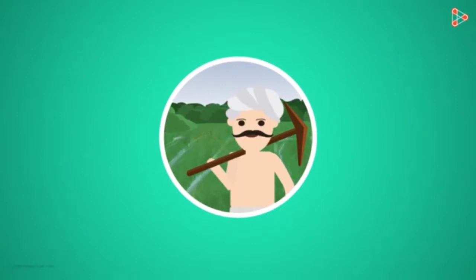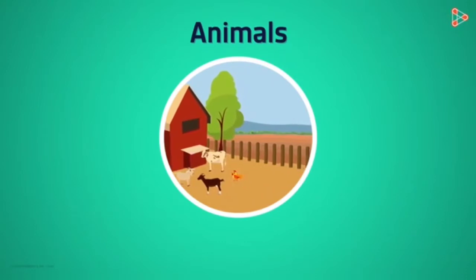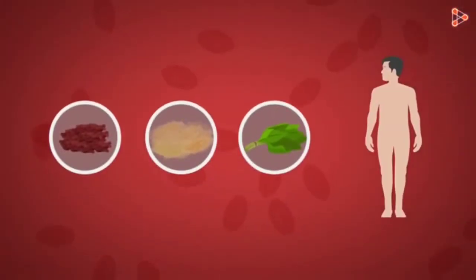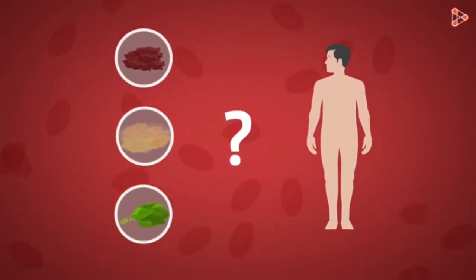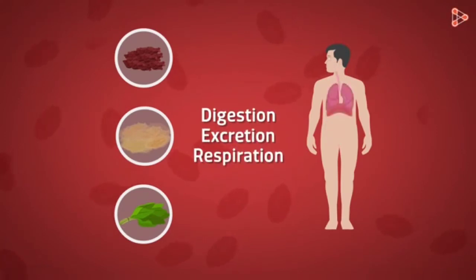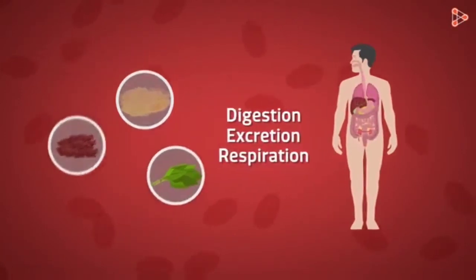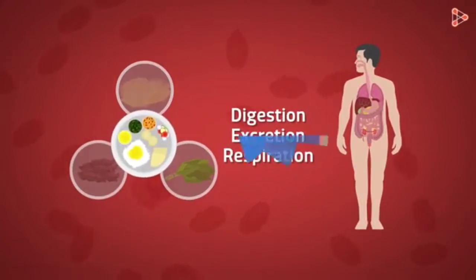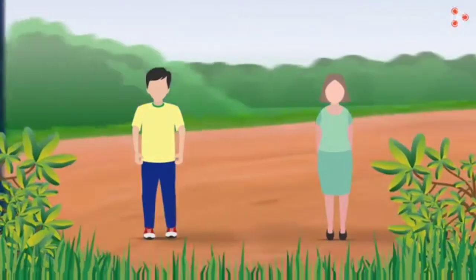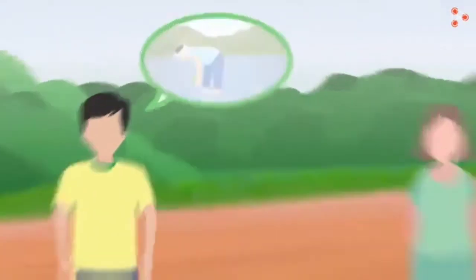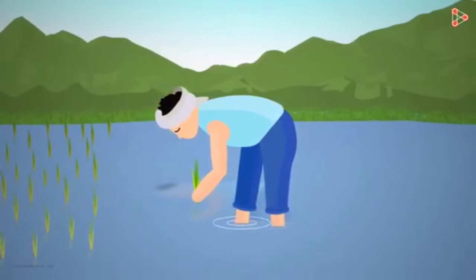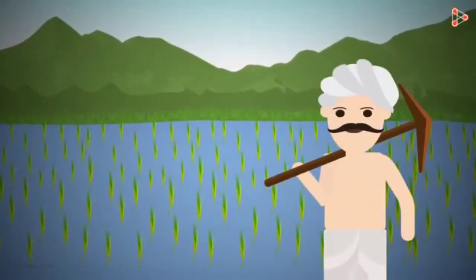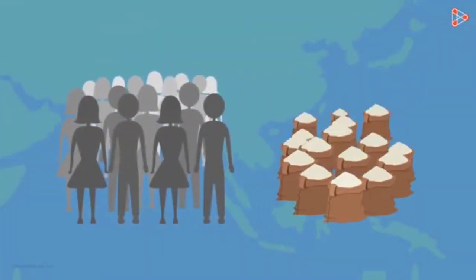That's right! We also get our food from animals. These animals are reared and taken care of by humans. This food then fuels our body to carry out all its processes. Without food, our body wouldn't be able to function at all. Can't every human produce his or her own food? Farmers produce food for the entire country, and with the growing population, food needs to be produced on a large scale.